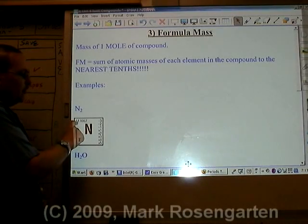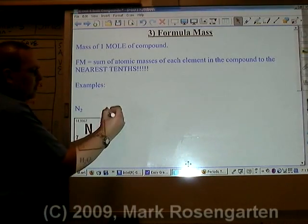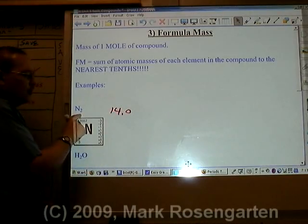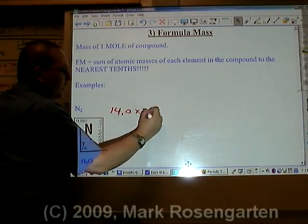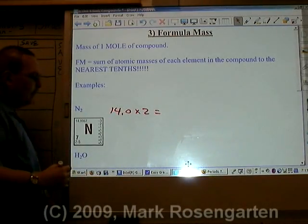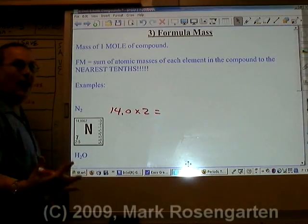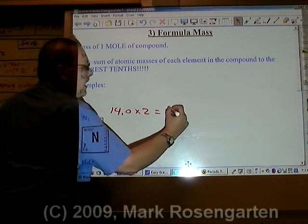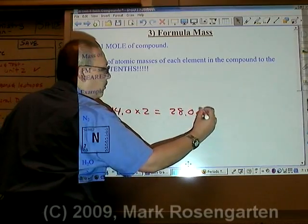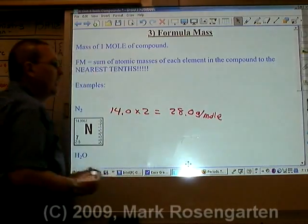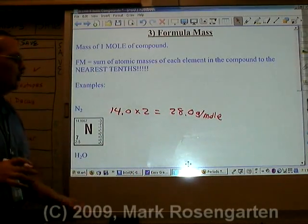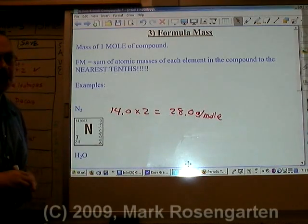So for some examples, we have N2. Now each nitrogen weighs 14.0. But there's two nitrogens in the formula, which means the total combined formula mass, or gram formula mass, because we're doing this in grams, is 28.0 grams per mole. That means each mole of nitrogen is going to weigh 28.0 grams.